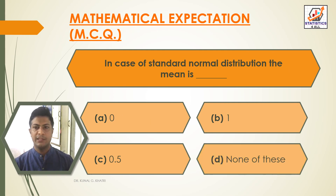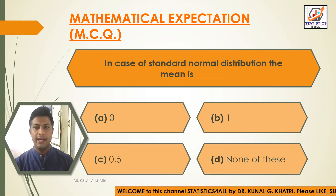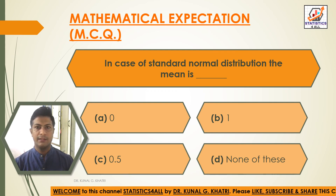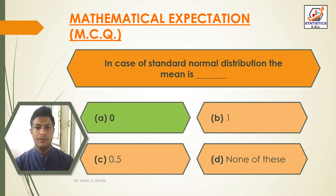In case of standard normal distribution, the mean is dash. Option A — 0; Option B — 1; Option C — 0.5; Option D — None of these. The answer is Option A: 0. In case of standard normal distribution, the mean is 0.